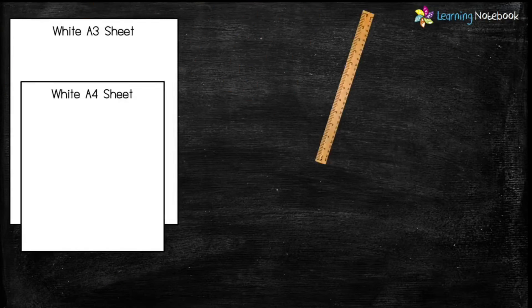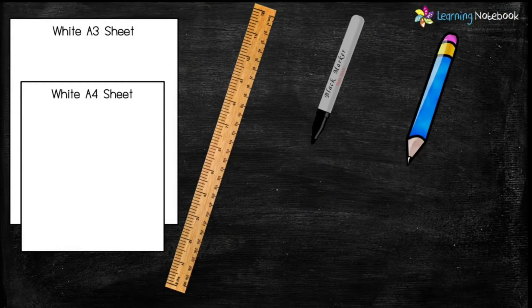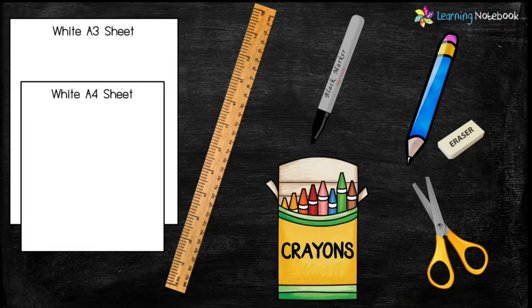For this activity we need one white A3 sheet, one white A4 sheet, a ruler, a black marker pen, a pencil, an eraser, a pair of scissors, and a box of crayons.